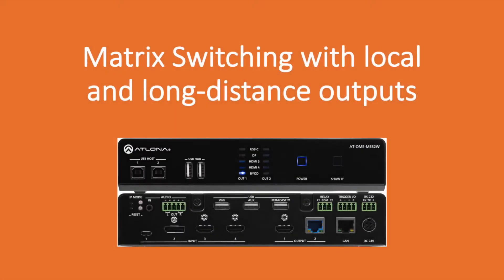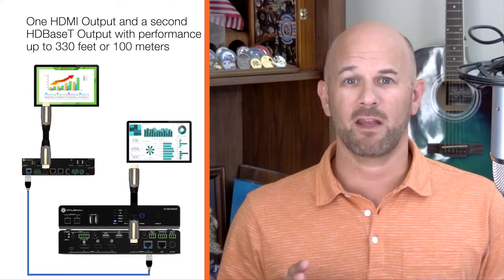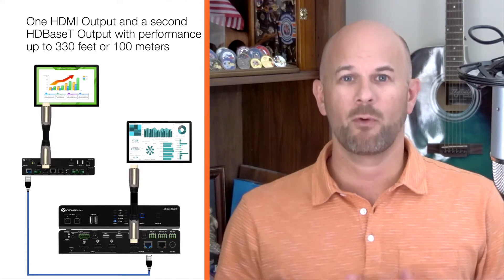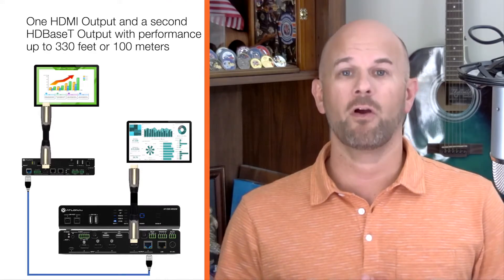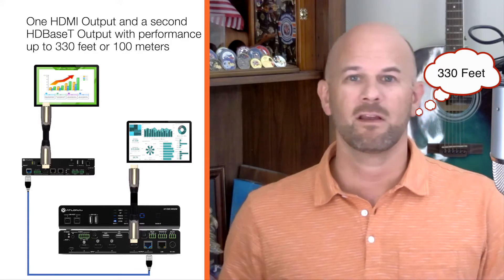Matrix switching with local and long distance outputs. The MS52W features matrix switching to two video outputs. One lets you make an HDMI connection to a display, while the other is for extending video over HDBase-T up to 300 feet or 100 meters. You can also install the MS52 wherever needed.